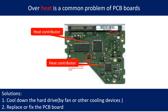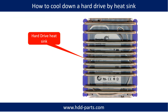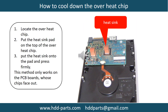Overheat is a common problem of hard drive PCB boards. Solutions: one, cool down the hard drive by fan or other cooling devices; two, replace or fix the PCB board. This picture shows the two main contributors to overheat. This picture shows how to use a fan to cool down the hard drive. This picture shows how to use a hard drive heat sink to cool down a hard drive. This picture shows how to cool down the overheat chips.